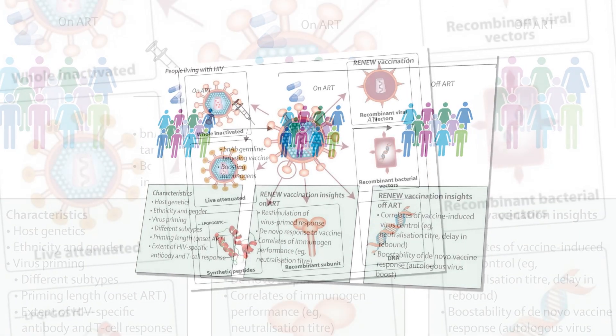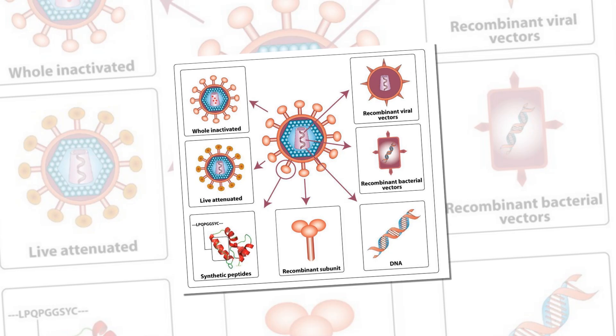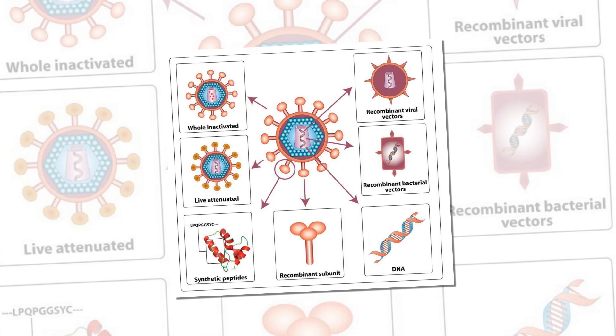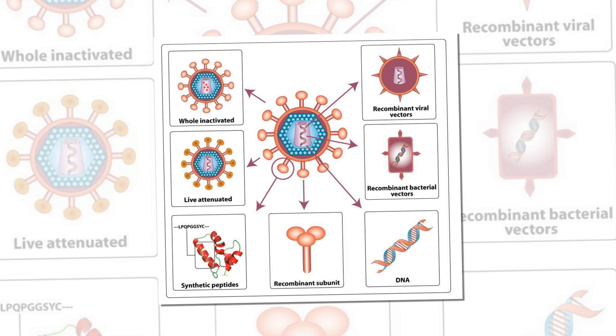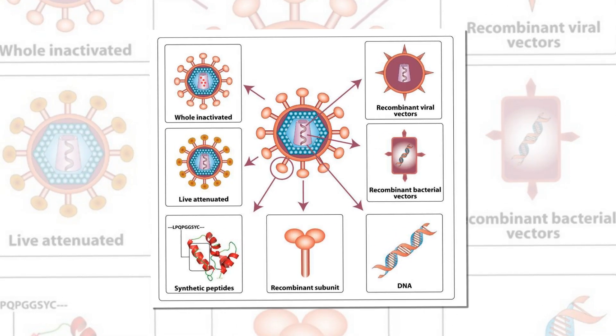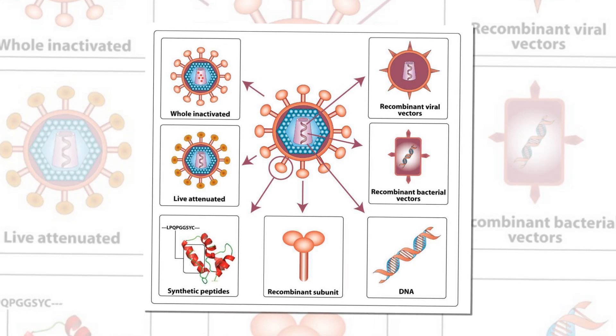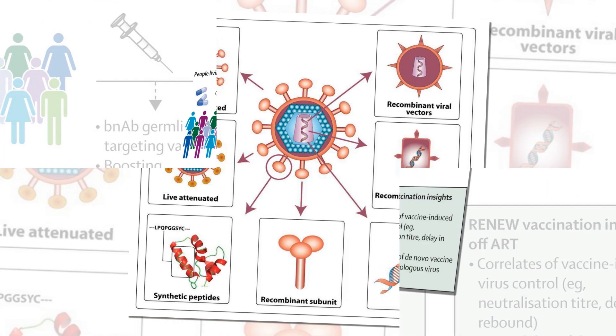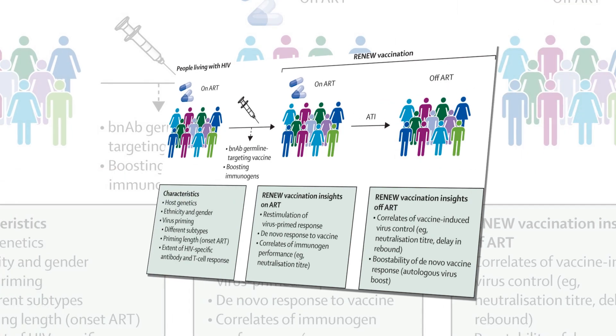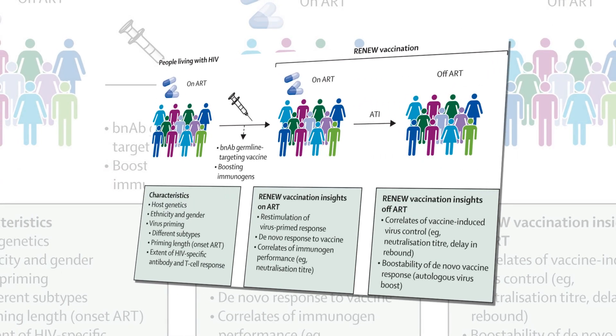What's more, the mRNA version of Core-g28v2 60-mer neutralized pseudoviruses that are similar to HIV but missing a sugar molecule that hides the CD4 binding site. A phase 1 clinical trial, IAVI G002, of the eOD-GT8 60-mer primer (which Moderna calls mRNA-1644) and the Core-g28v2 60-mer booster (mRNA-1644.v2-Core) is currently underway.